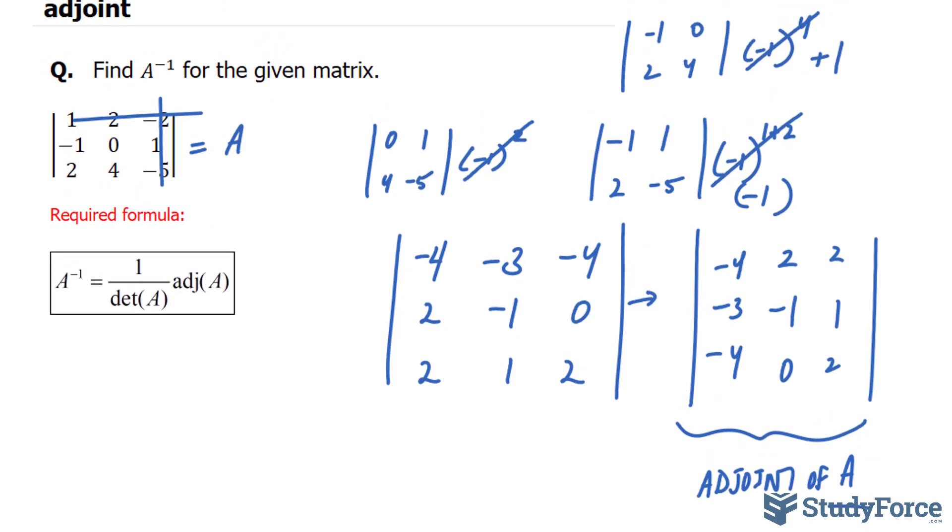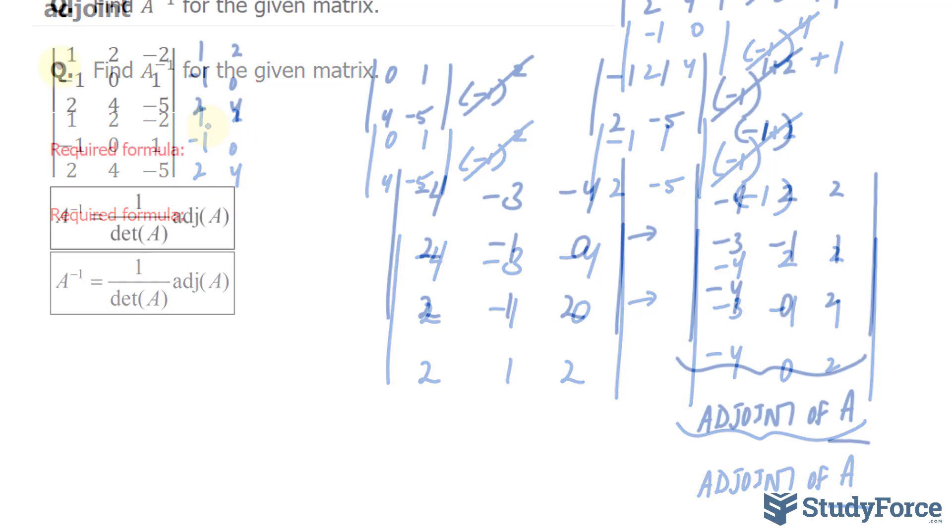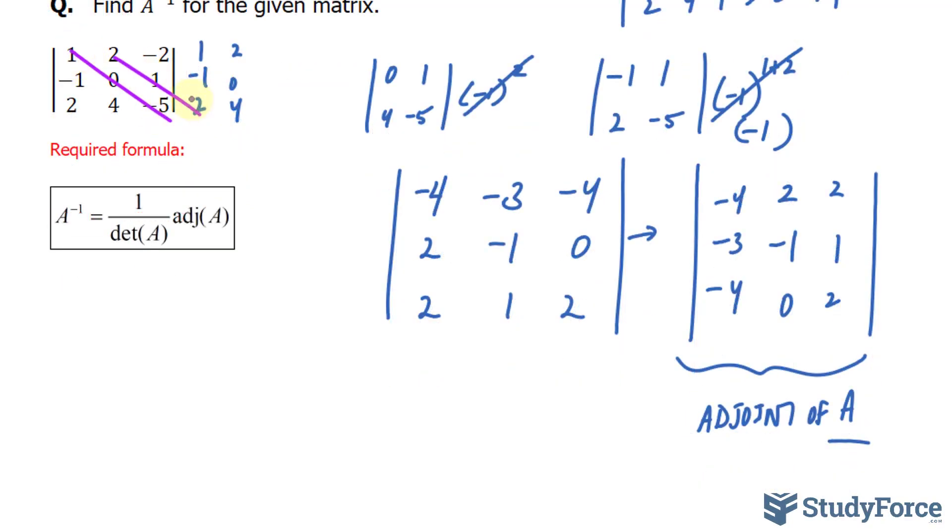Now we have to find the determinant of a 3 by 3 matrix and we've learned a trick on how to do this, it's not hard to do. You'll rewrite these two columns right next to the last, 1, negative 1, and 2, 2, 0, and 4.